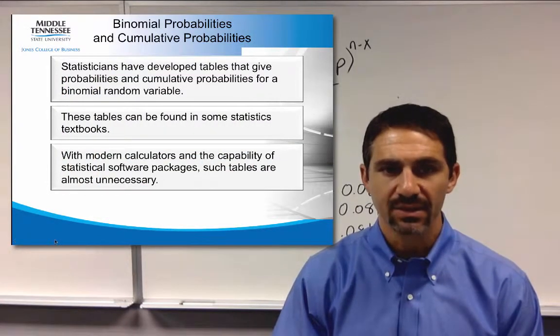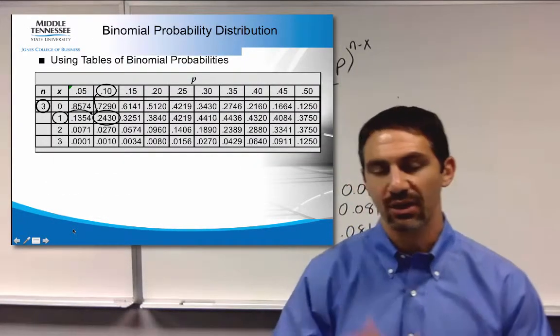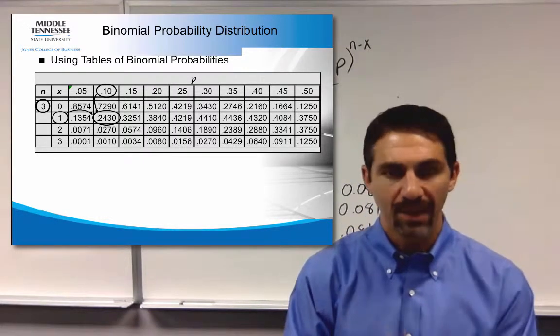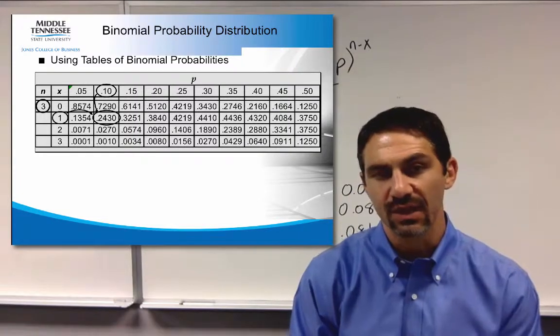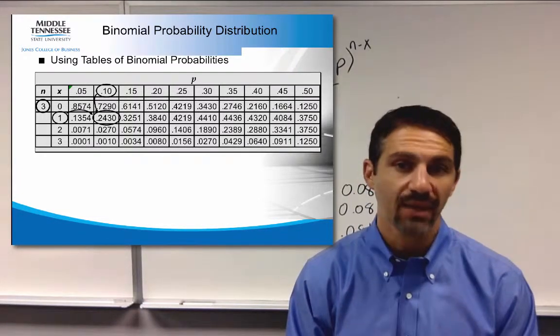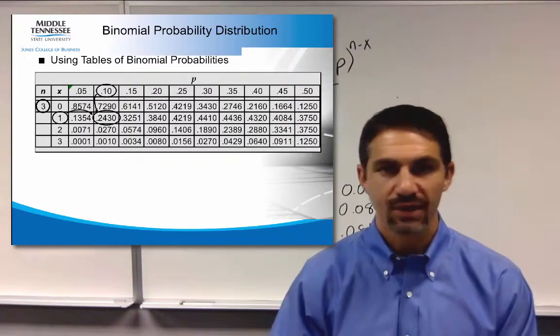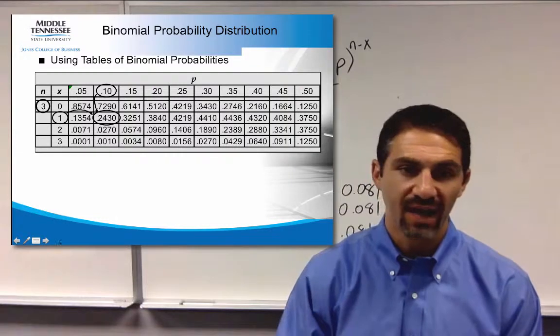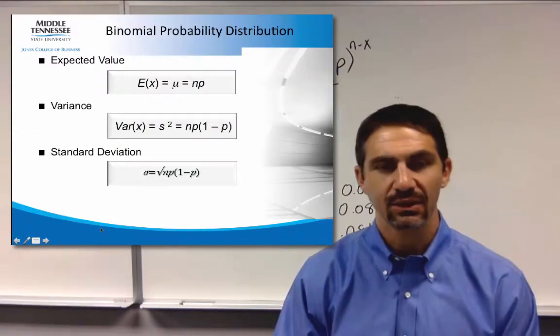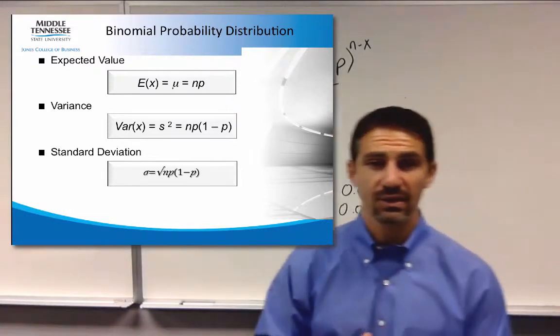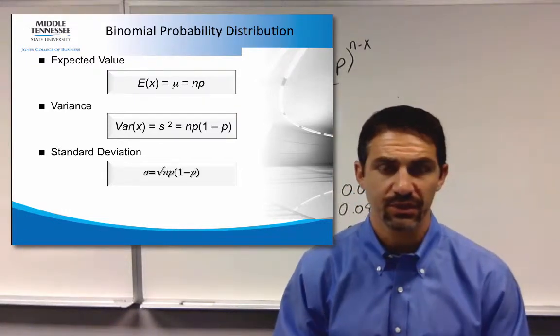There's also some tables that should be in the back of your book or in your eBook, and you can look at those as well. Again, my recommendation is to go and use Excel to do this. I think it makes your life a lot easier. Because then you don't have to worry about an exact probability. Your tables only go by increments of 0.05, and it's not as easy to do. So I highly recommend using Excel to do binomial distribution.